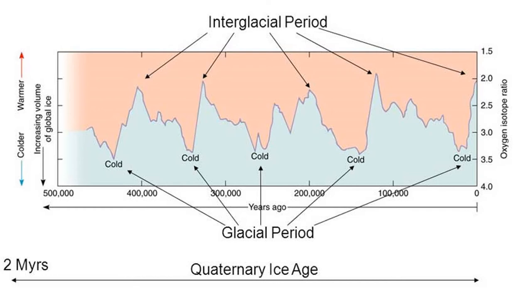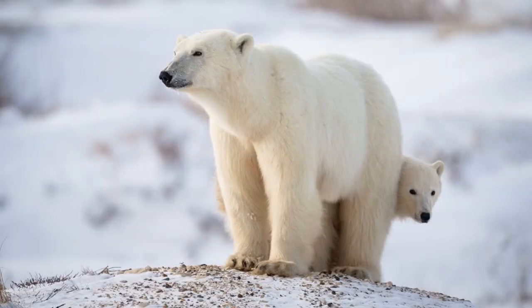Naturally, ice sheets grow during time intervals when the climate is cold and shrink when the climate is warm. A graph illustrating the volume of global ice over time shows this clearly. We refer to the cold time intervals when ice sheets are the largest as glacial periods, and the warm time intervals when the polar ice cap is relatively small as interglacial periods. We are now living in an interglacial period within the much larger Quaternary Ice Age — there are still polar ice caps, but they do not cover much of the Earth.